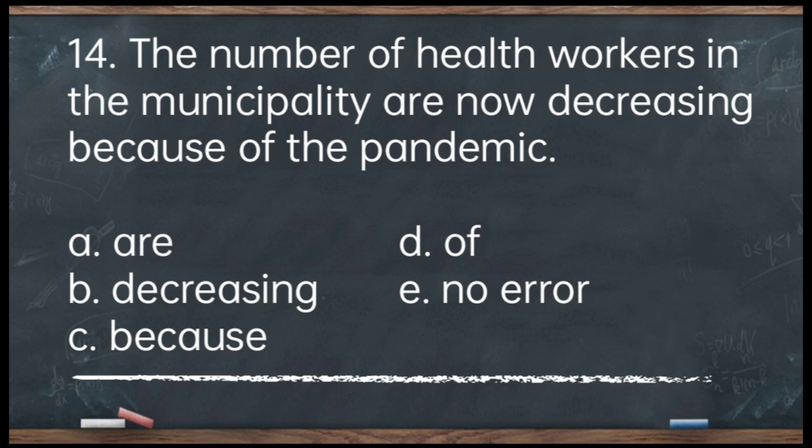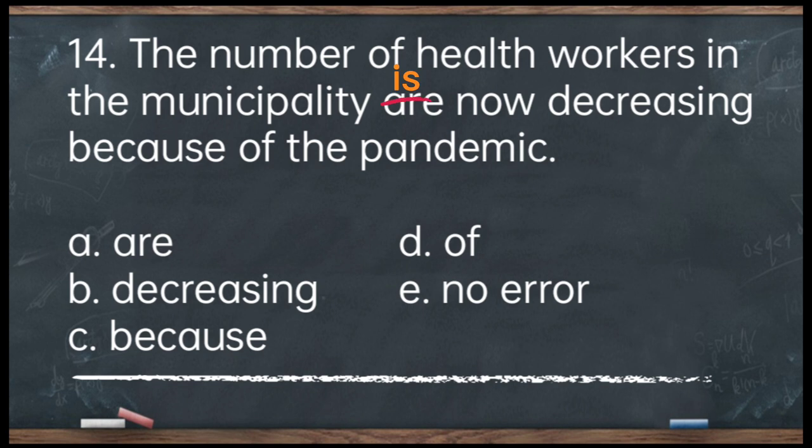Number 14. The number of health workers in the municipality are now decreasing because of the pandemic. A. Are. B. Decreasing. C. Because. D. Of. E. No error. The answer is letter A — 'are.' If we use the expression 'the number,' it is singular, so you say 'the number is,' not 'the number are.' Corrected: The number of health workers in the municipality is now decreasing because of the pandemic. Note: 'a number' would be plural.